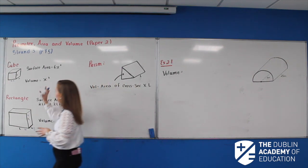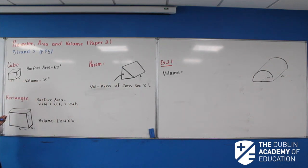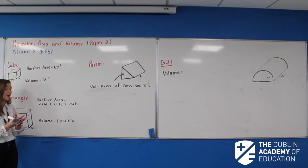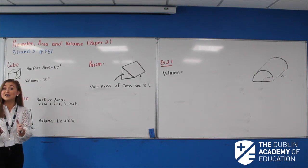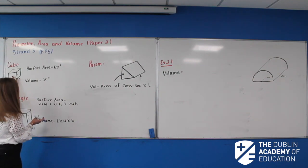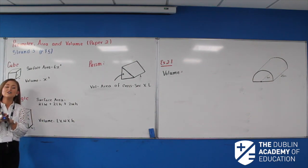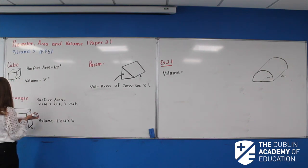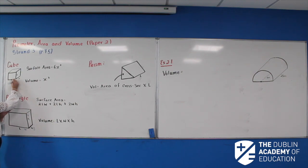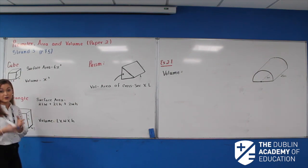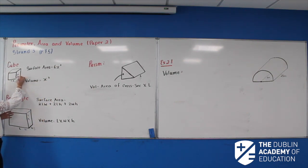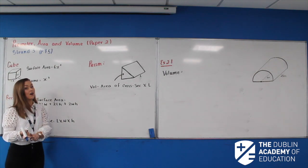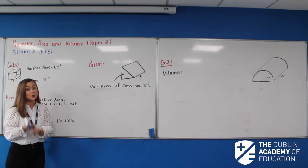I'm going to start with the first shape and go shape by shape running down through them. The first shape is a cube. Cubes are basically made up of faces which are actual squares, so the lengths of all their sides are the exact same. For example, if this side is five, notice if an exam question says the word cube, that means every side is five — the length, the width and the height are all five.